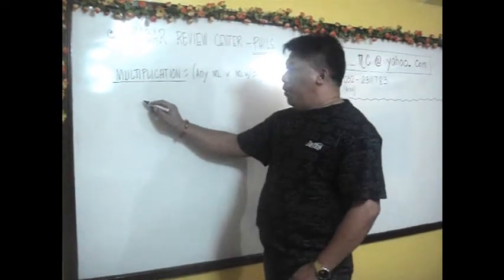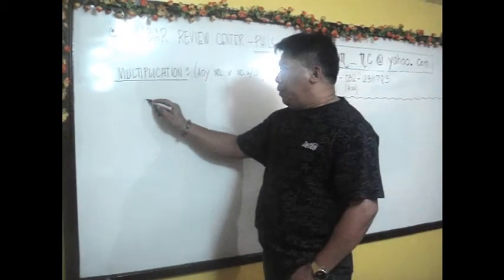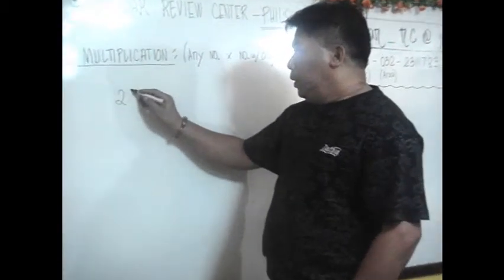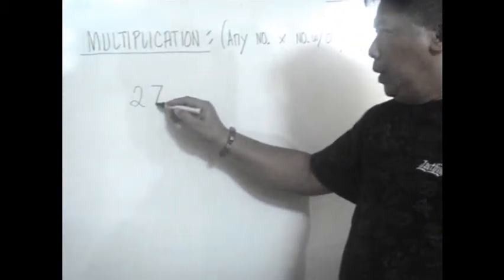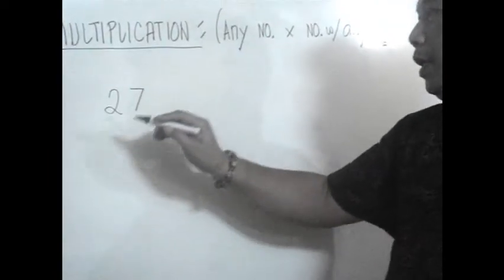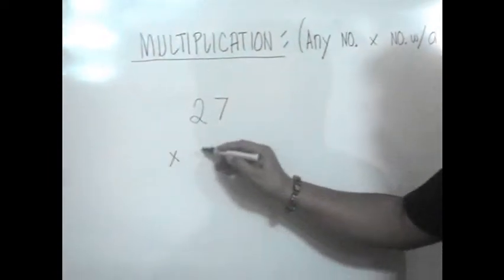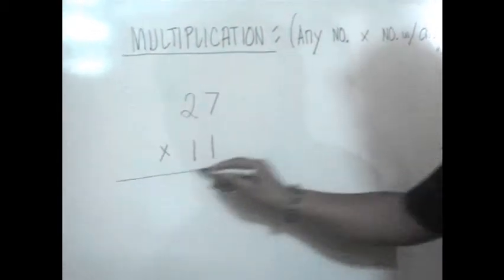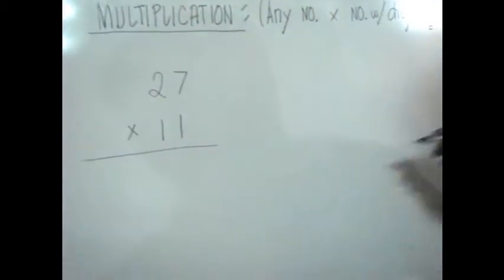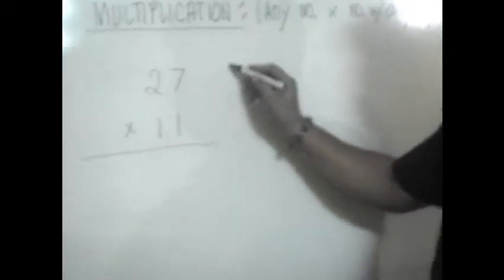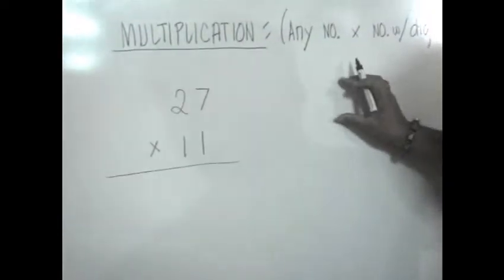For example, if we have 27 times 11, you might say times here 11 in horizontal form, or we can do the multiplication in vertical form.